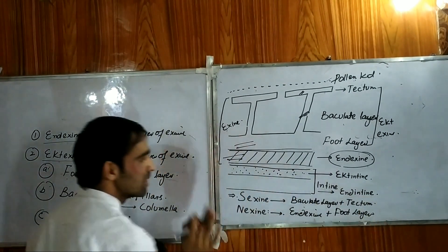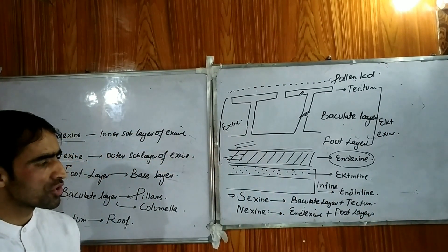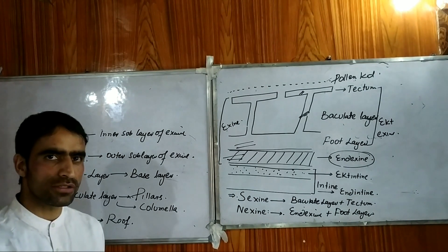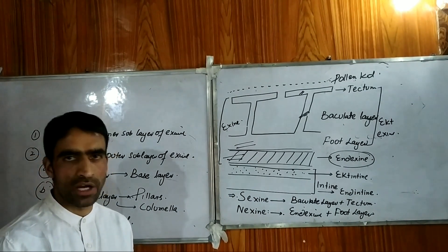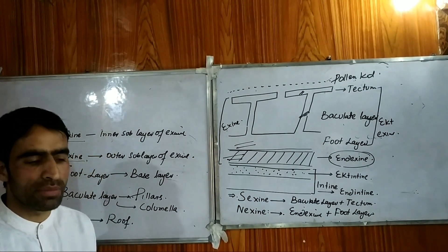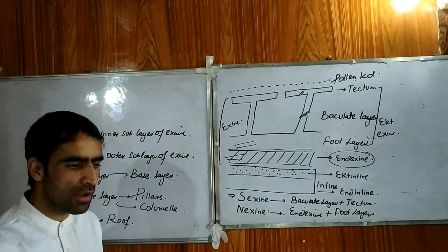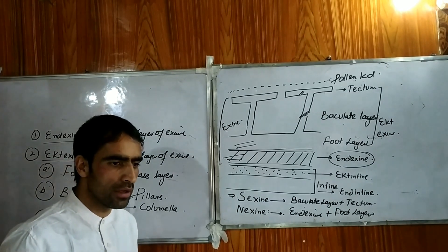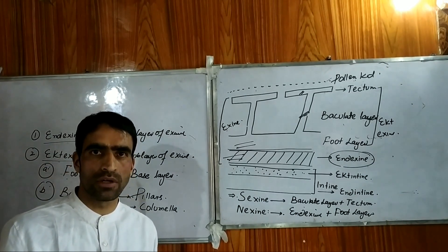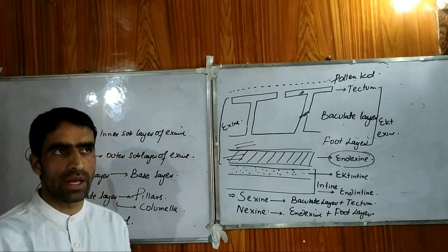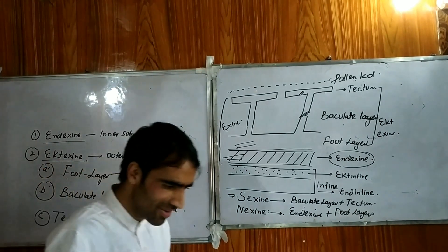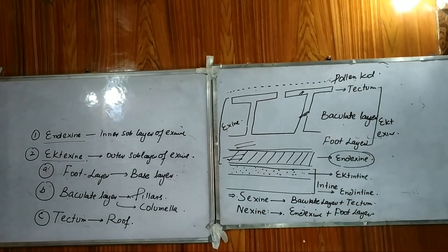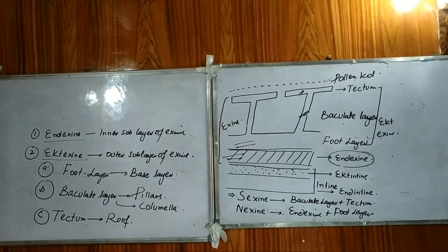So this was the explanation of pollen grain structure. The next lecture will be very important — we will discuss why exine is absent in some parts of the pollen grain, and what is meant by germ aperture and its function. Best of luck!